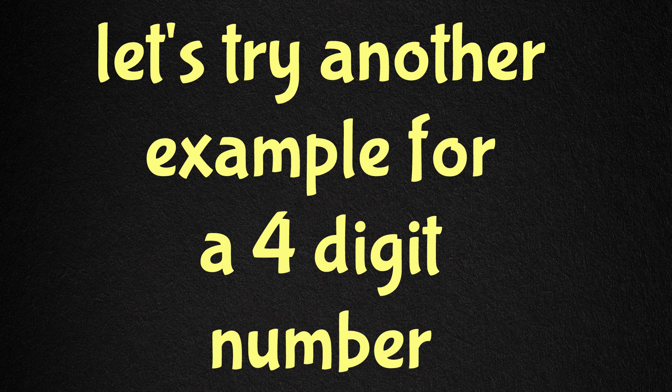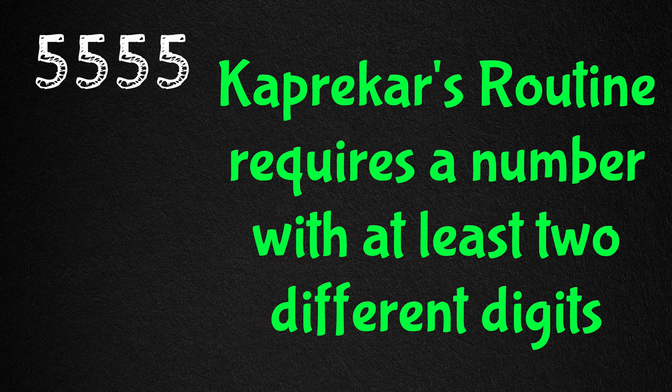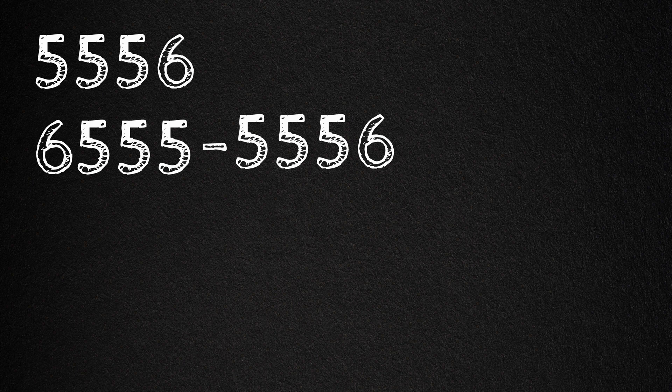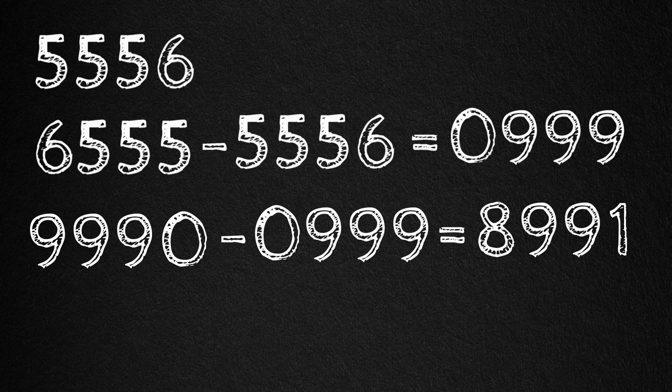Let's try another example with a number that seems more resistant. 5555. Wait, this won't work because all the digits are the same. Kaprekar's routine requires at least two different digits. So let's use 5556 instead. So we have in descending order 6555 minus ascending order 5556, which becomes 0999. And then in descending order 9990 minus ascending order 0999, and we get 8991.